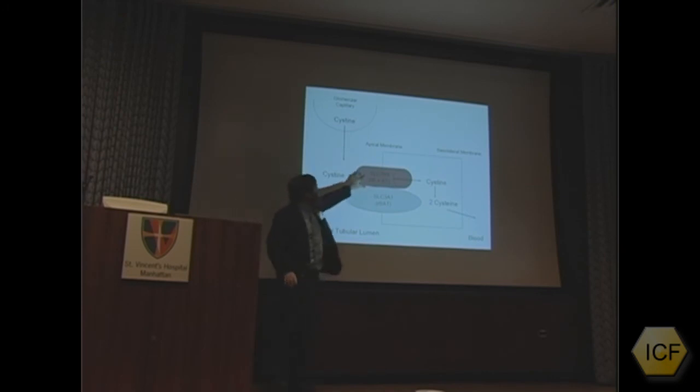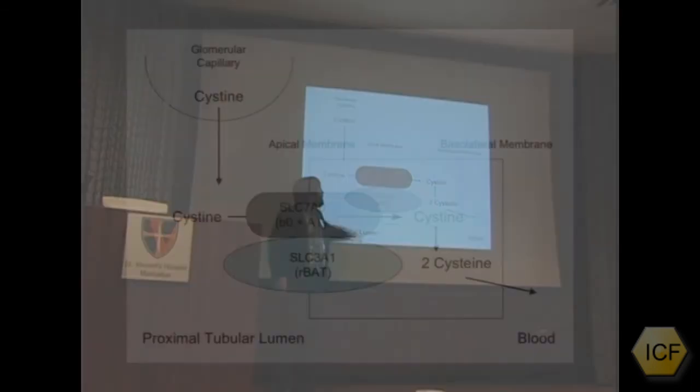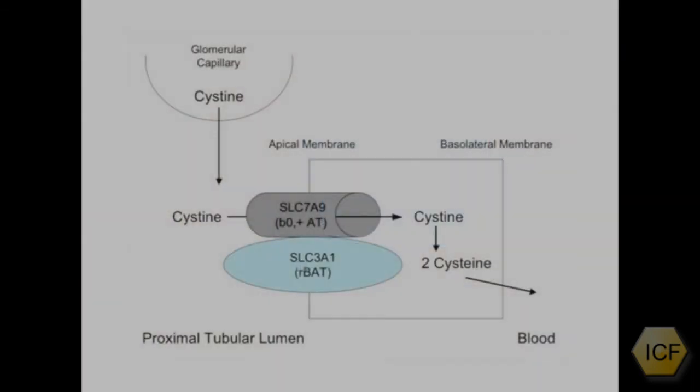The other part of this molecule is a gene called SLC3A1. SLC3A1 is more frequently mutated, a more frequent cause of cystinuria. That gene product, the protein, is currently called rBAT, which is for related to basic amino acid transporter.